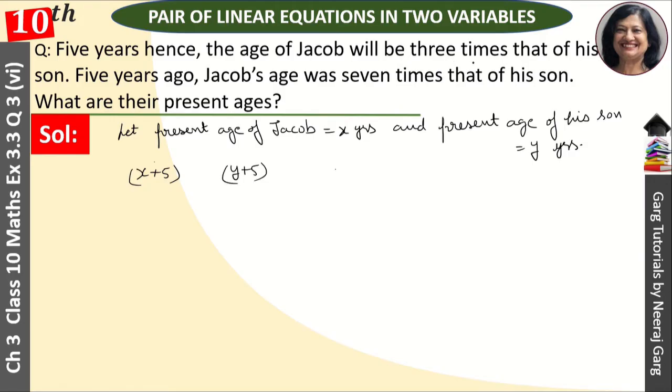So it says that mine became three times that of his son. So is equal to, and we have to multiply three with whom? Naturally with son's age. And we'll simplify this equation. So this becomes x plus 5 is equal to 3y plus 15, or x is equal to 3y plus 10. This is our first equation.